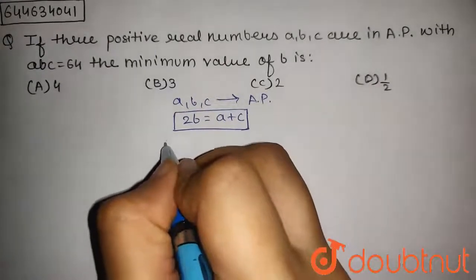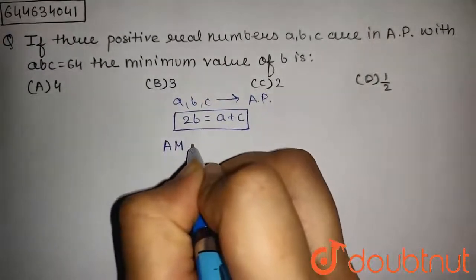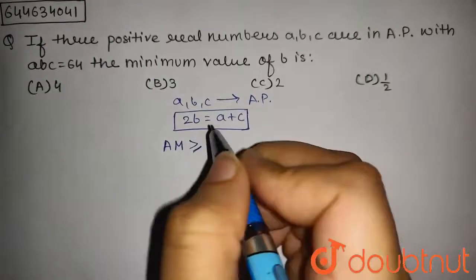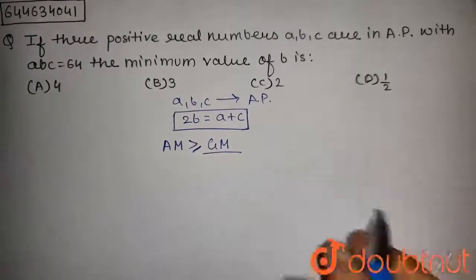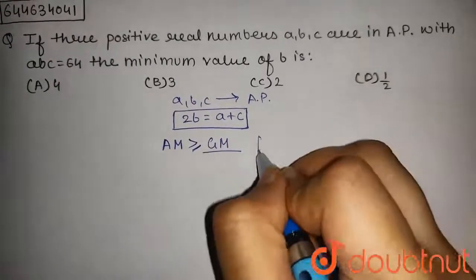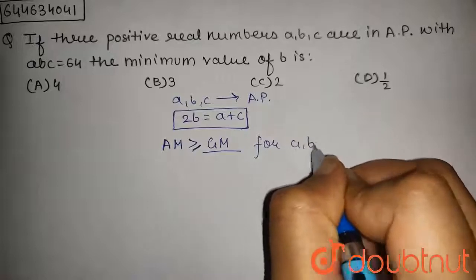As we know that arithmetic mean is always greater or equal to geometric mean, by using this inequality for A, B and C,